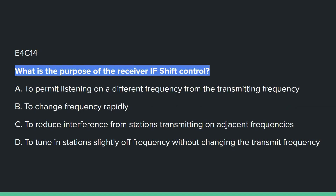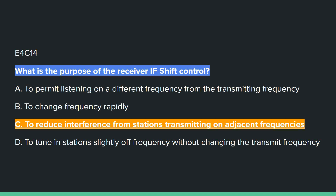E4C14: What is the purpose of a receiver IF shift control? Answer C: to reduce interference from stations transmitting on adjacent frequencies.